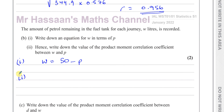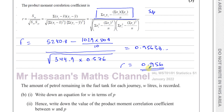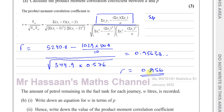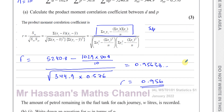Hence write down the value of the PMCC between W and P. The value of R tells us about how strong the correlation is and what type of correlation there is between W and P. The correlation between petrol used and distance travelled is very strong — almost 1. If R equals 1, it's perfect positive correlation; if R equals negative 1, it's perfect negative correlation.